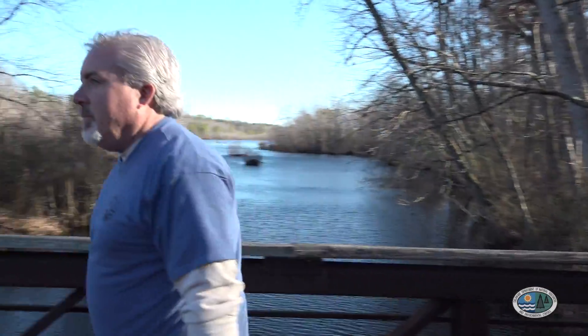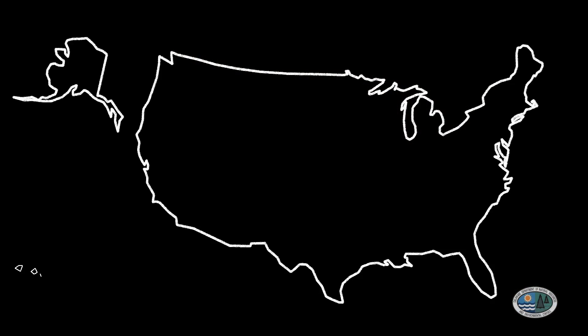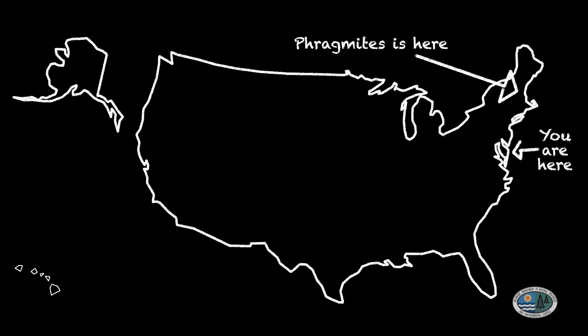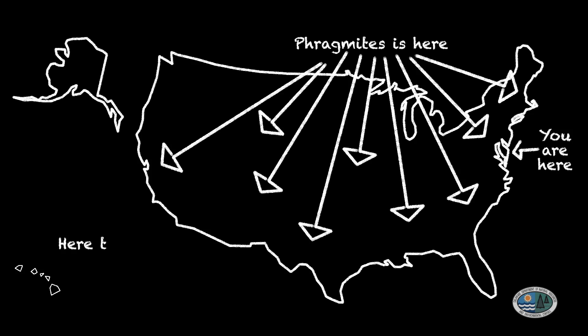We'll learn about one of Delaware's most prominent invasive species. The most common invasive plant found in Delaware is the common reed, or Phragmites australis — also called Phragmites or Phrag for short. It was introduced to the US in the 1800s from Asia and currently resides in the lower 48 states. It can be found in both tidal and non-tidal wetlands.